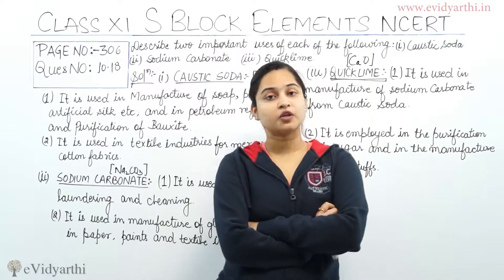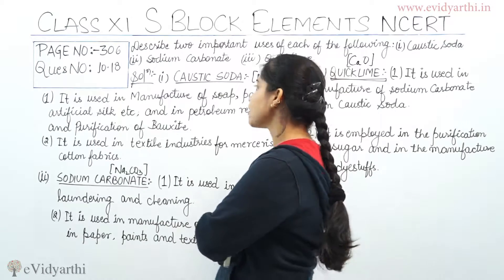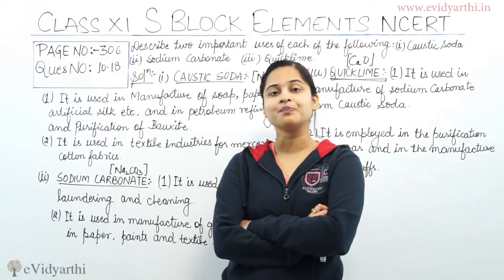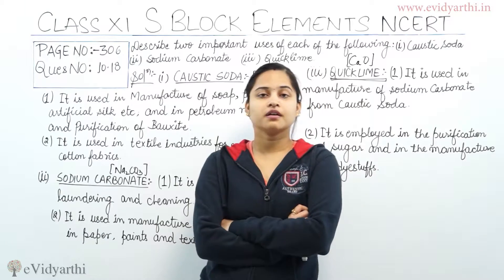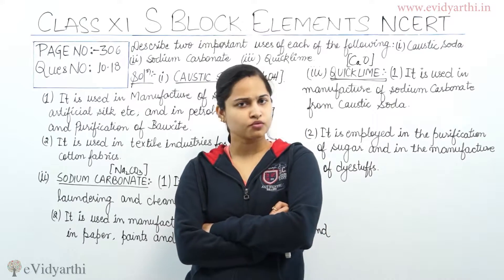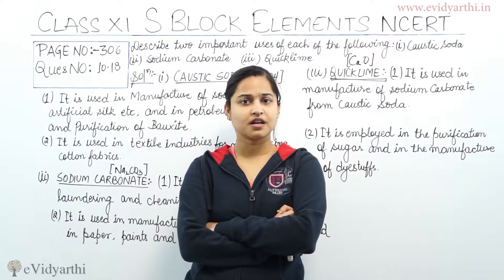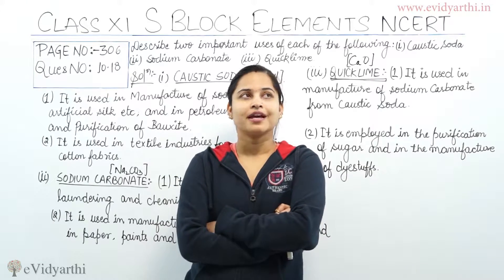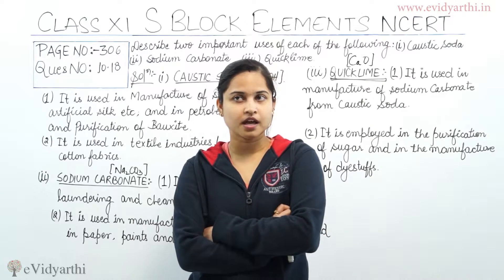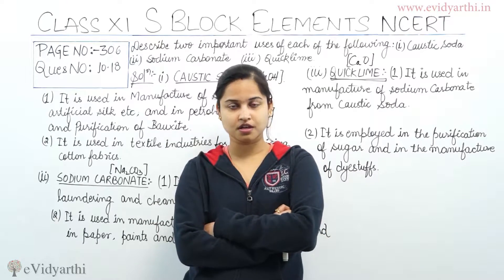First, we are asked about caustic soda. Caustic soda is used in the manufacturing of soap, paper, artificial silk, etc., and also in petroleum refining and for the purification of bauxite. This is the first important use.